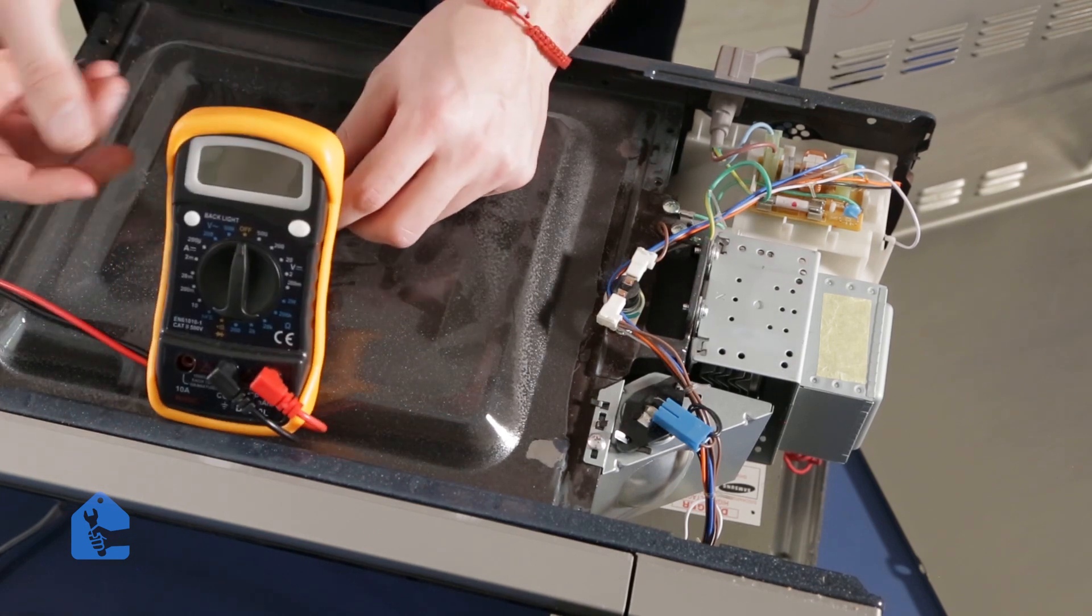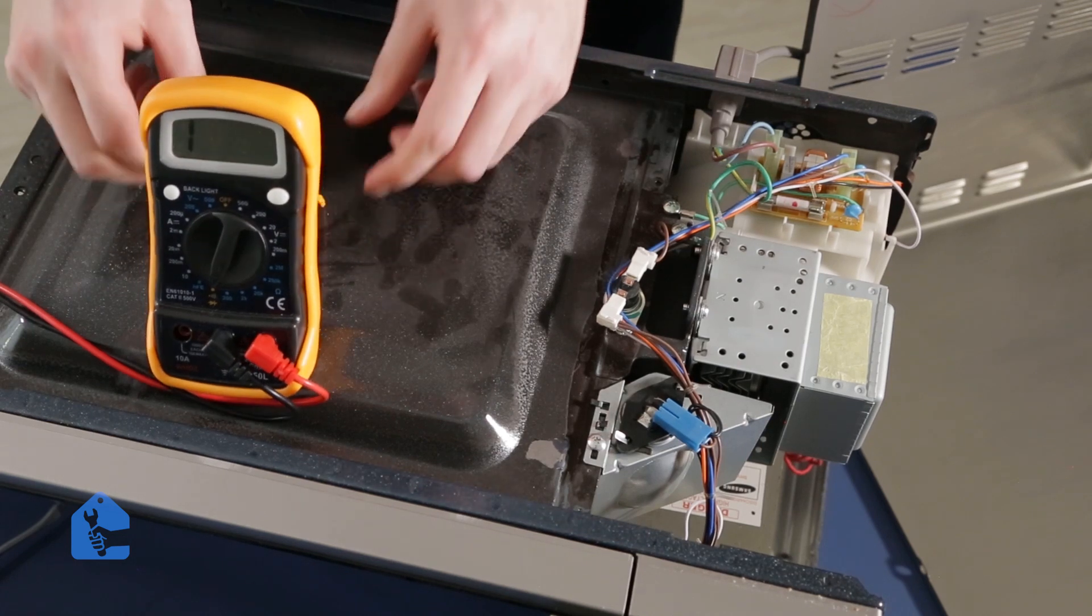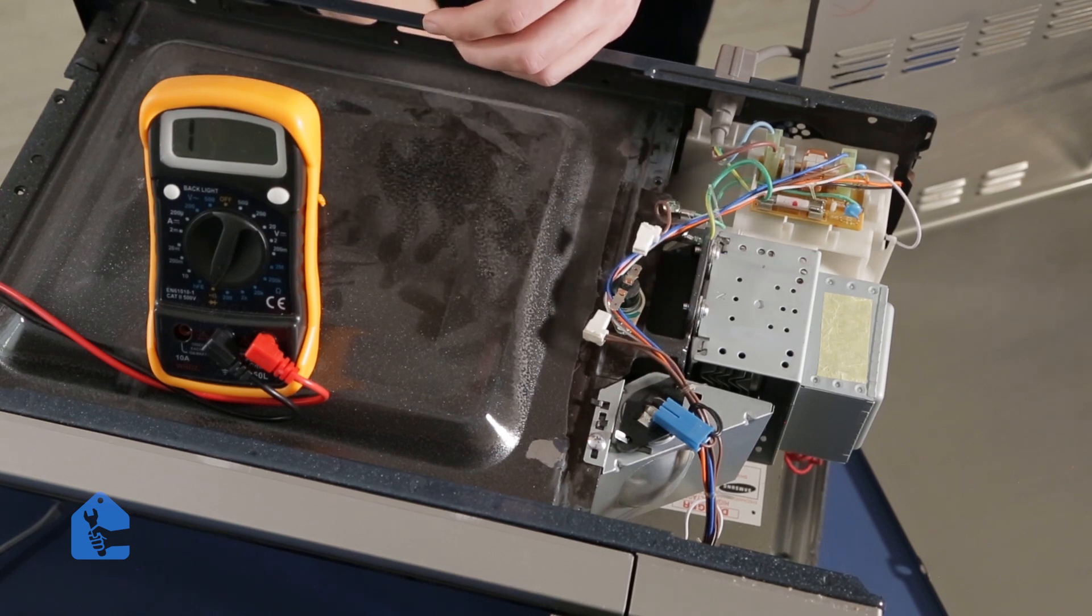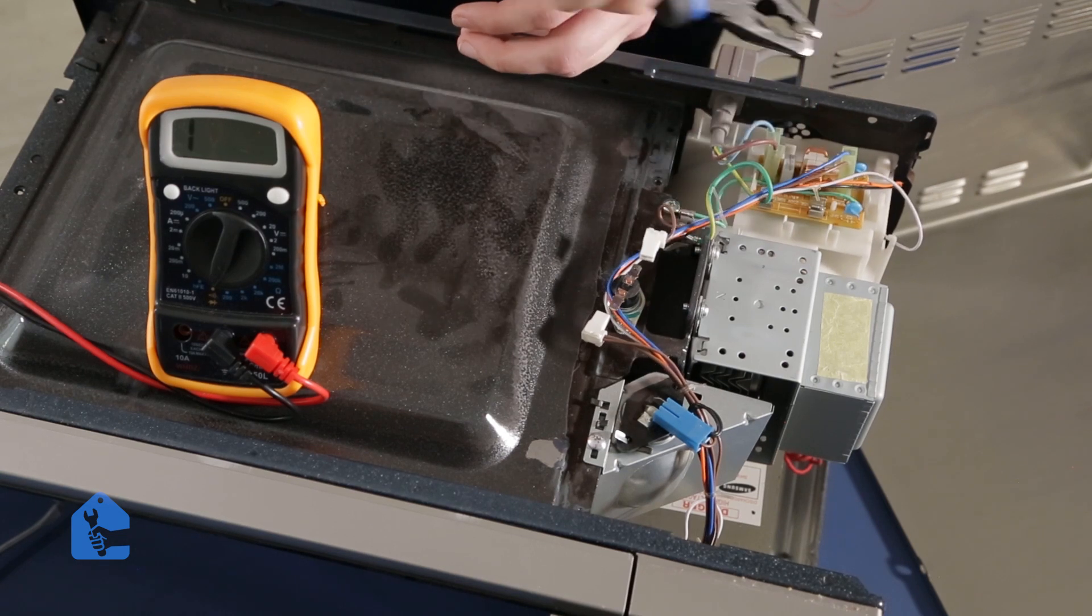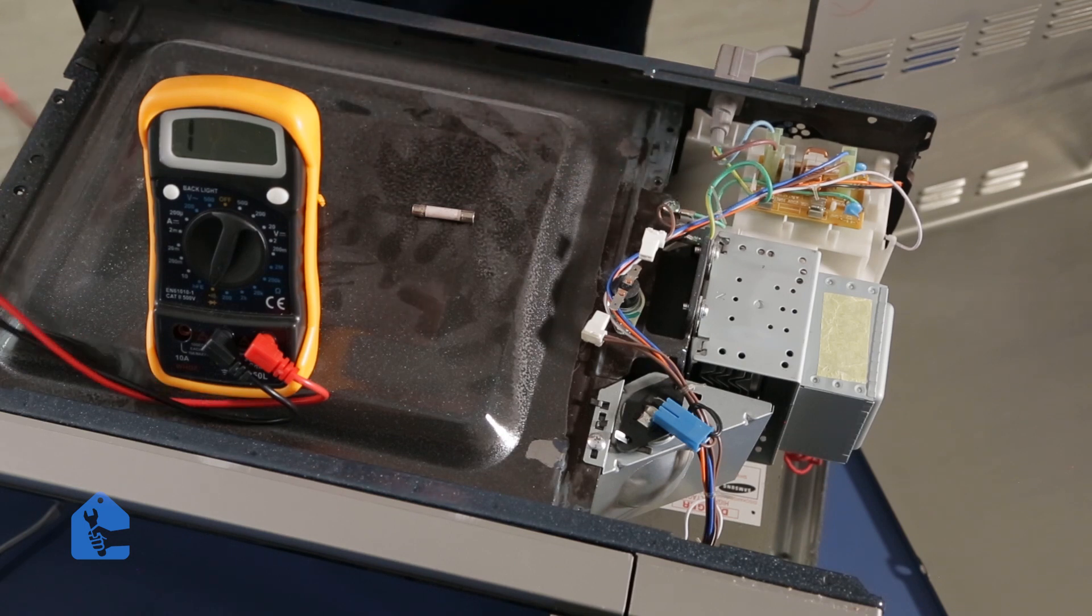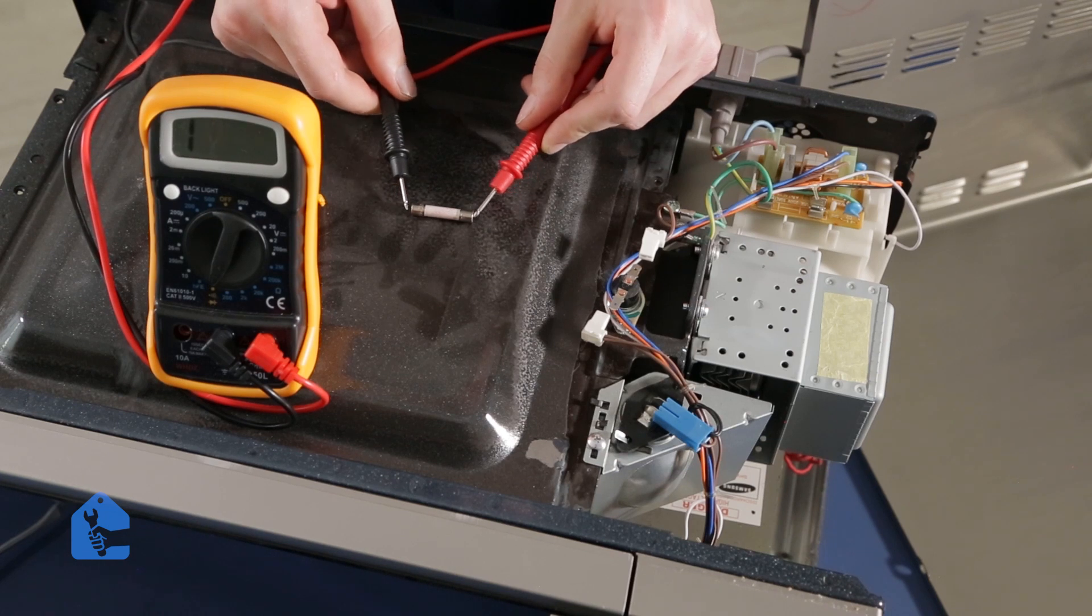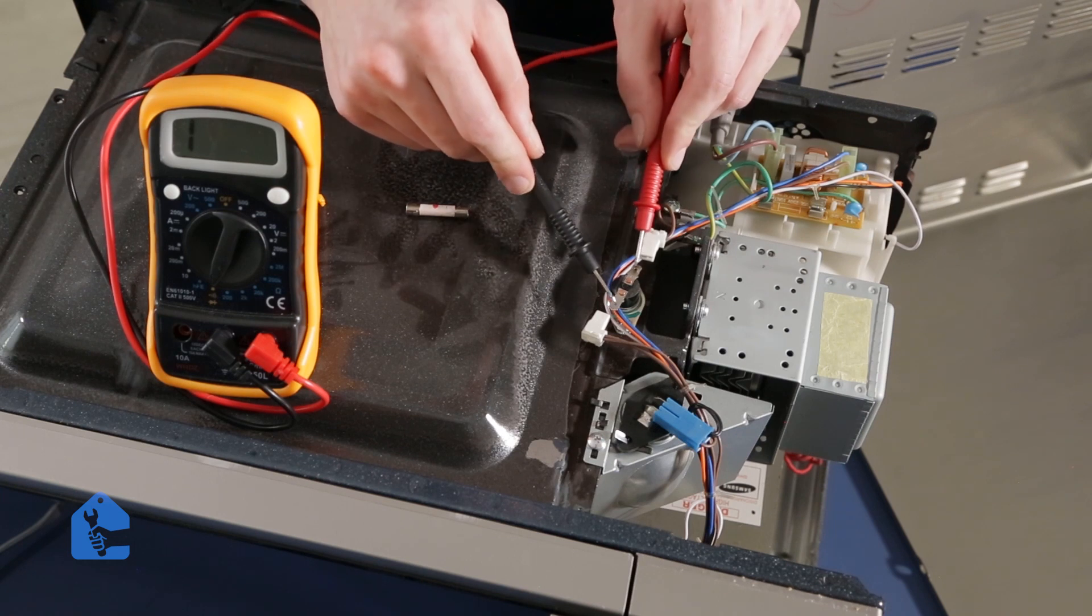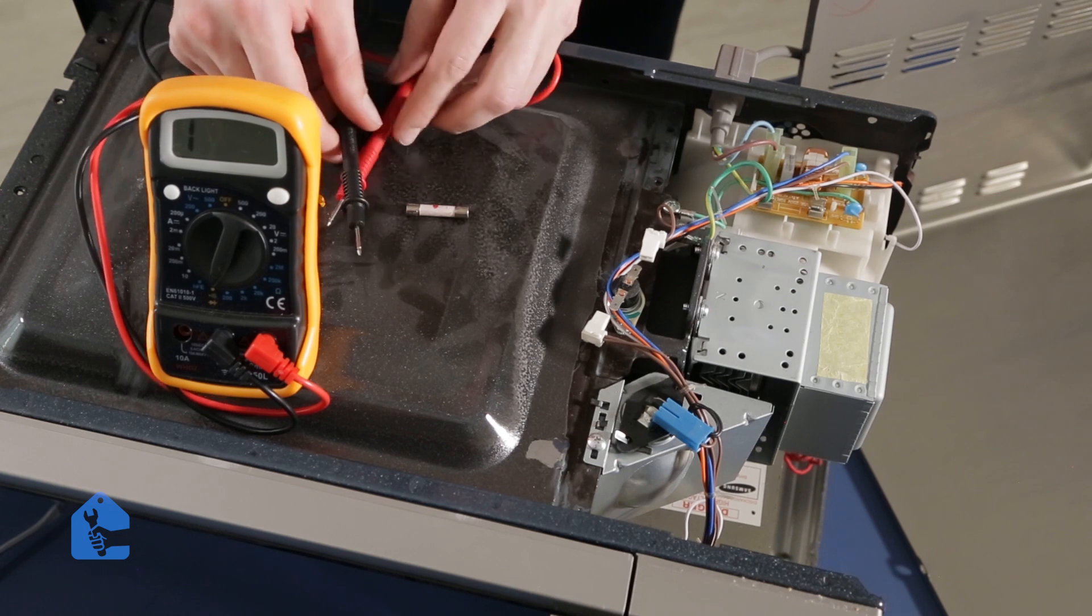Go ahead and grab your multimeter and set it on the continuity test. To test them right, we have to disconnect wires from each fuse. The second fuse I will be removing using a pair of pliers like so. All right, let's go ahead and test each component. So this component is working fine and this fuse is in order as well. Unfortunately in our case it wasn't that easy, so we're going to test other components.